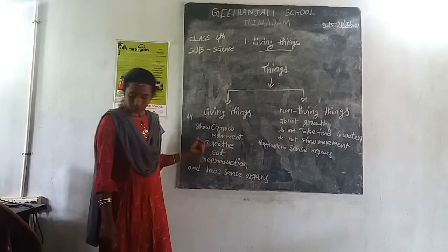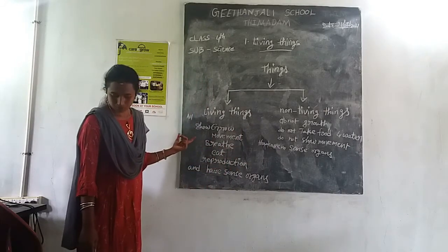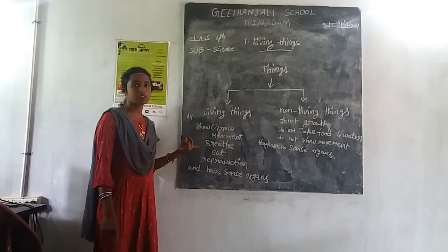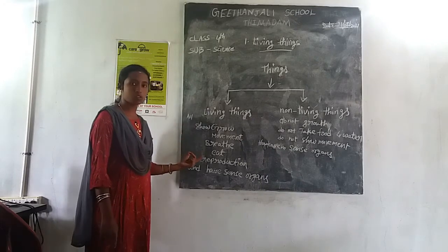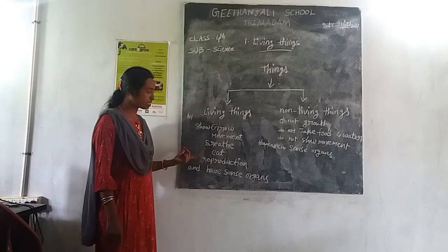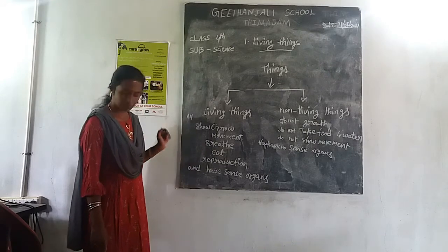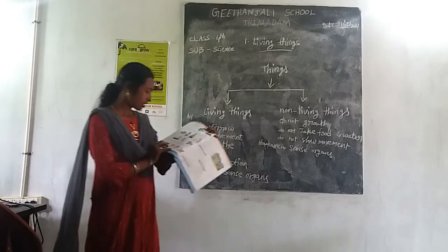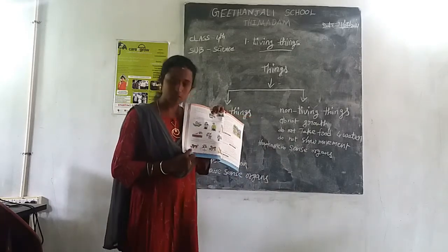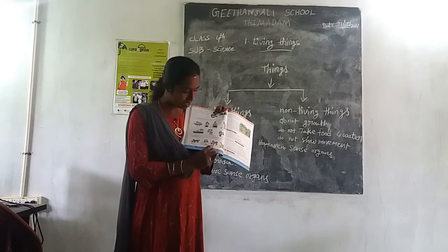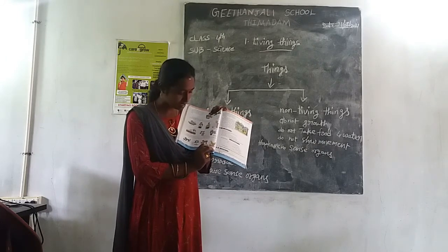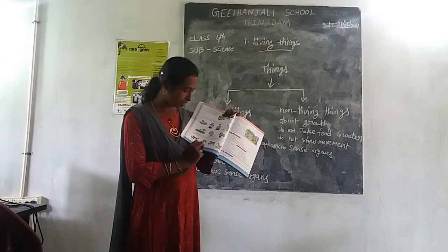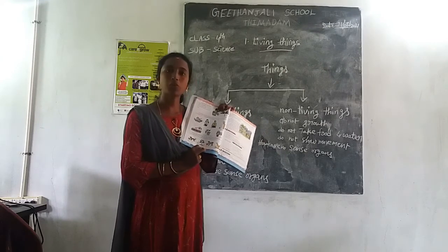Reproduction means all living things produce their own kind. For example, plants can reproduce new baby plants, and animals give birth to young ones. Cat gives birth to kittens, dog gives birth to puppies, hen gives birth to chicks, and a seed produces a new baby plant.